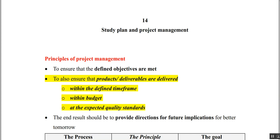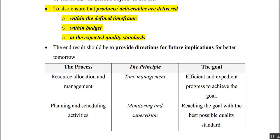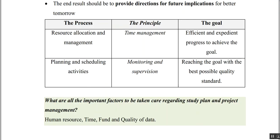The end result should provide directions for future implications. The processes involved are: first, we have to allocate and manage resources — the principle is resource management, and the goal is efficient and expedient progress. The second process is planning and scheduling activities; once resources are allocated, you plan all activities. The principle here is monitoring and supervision to reach the goal with the best possible quality standard.